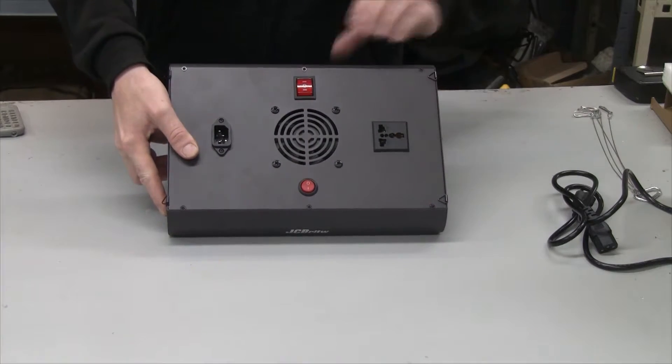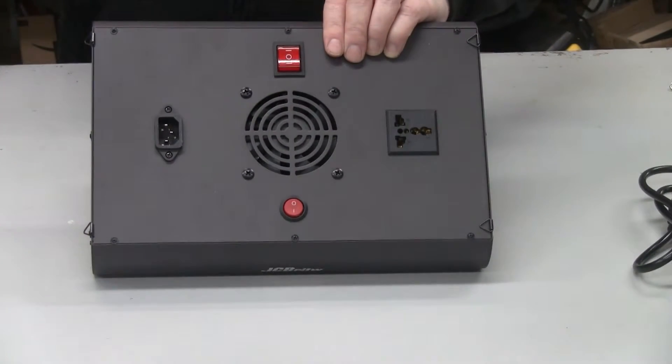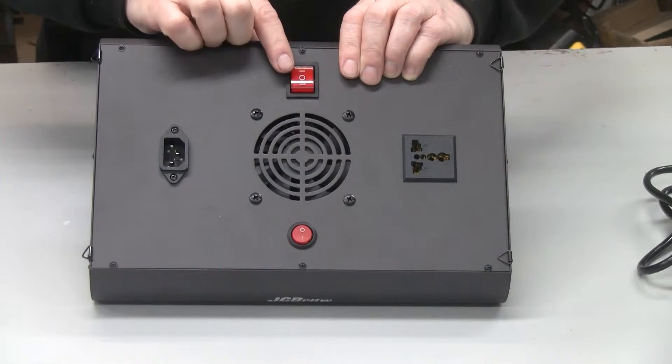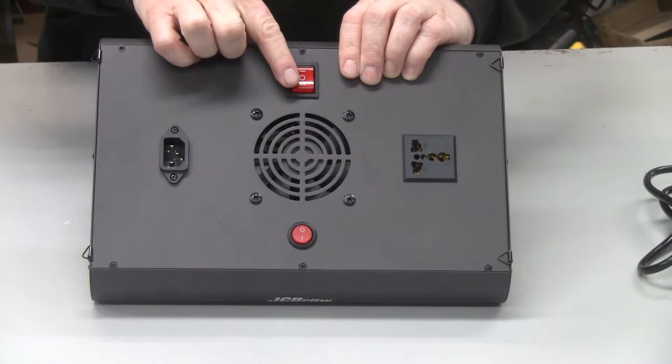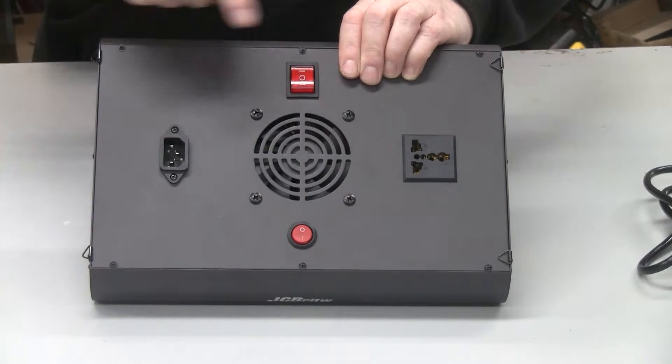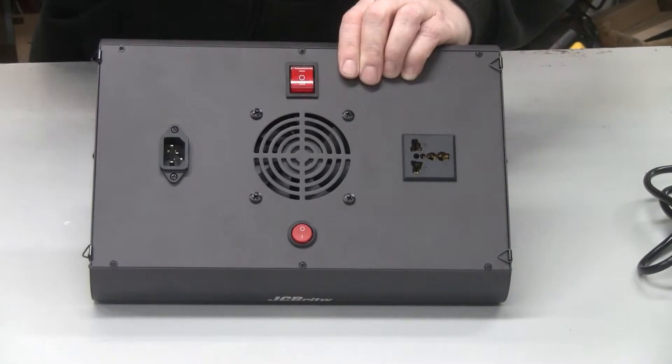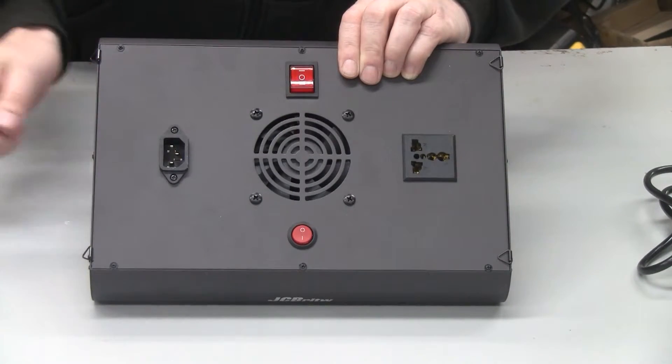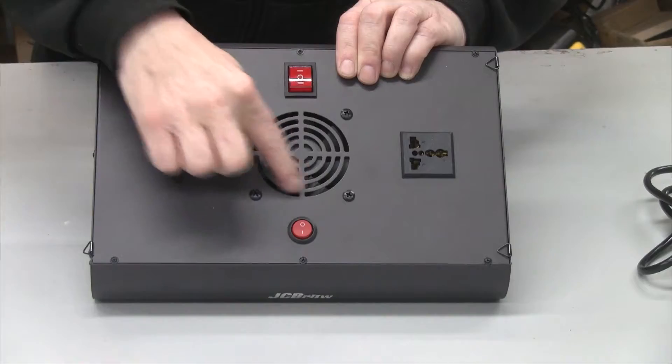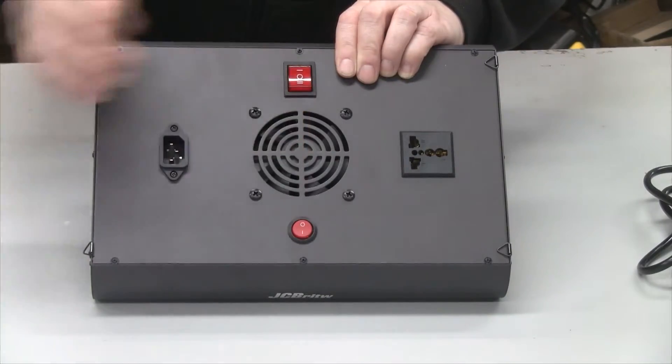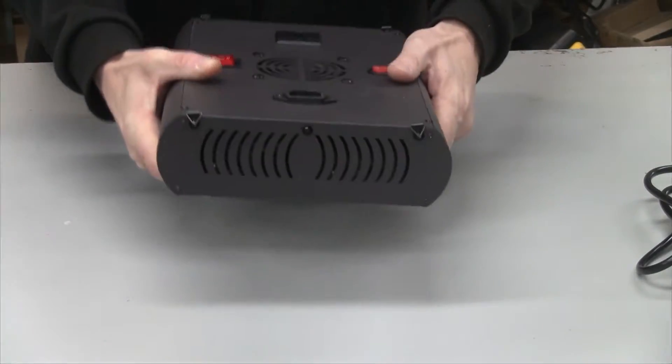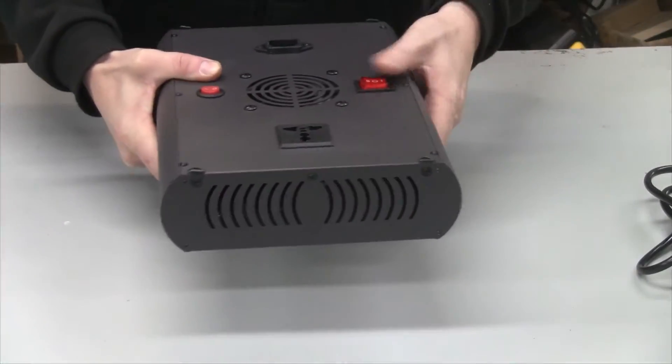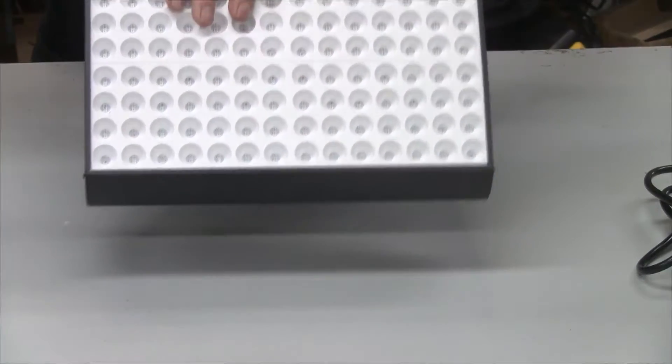On the back here we have the on and off, and then you can switch between veg and bloom with this switch here. You can also daisy chain this to other grow lights. You can have a series of these in a row. This is where the power cord plugs in, and this is the fan where it pulls in cool air and blows the air out the sides with these vents.